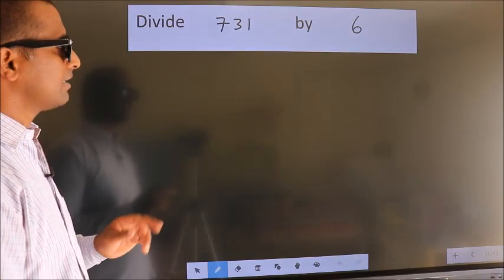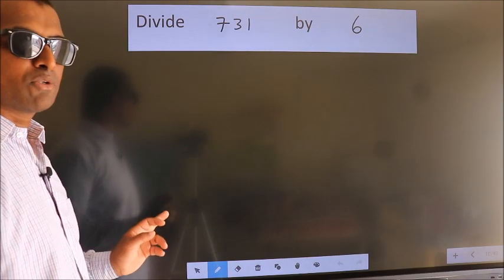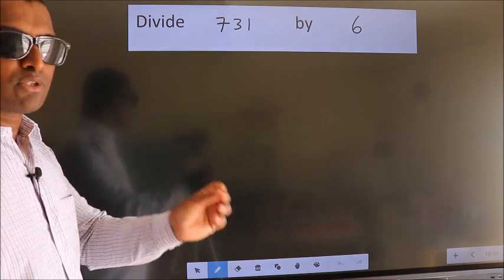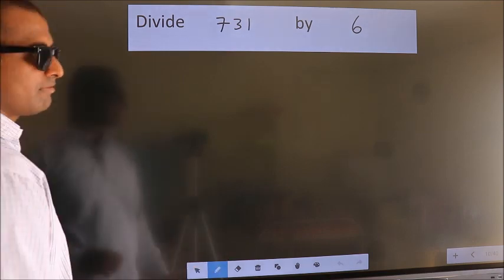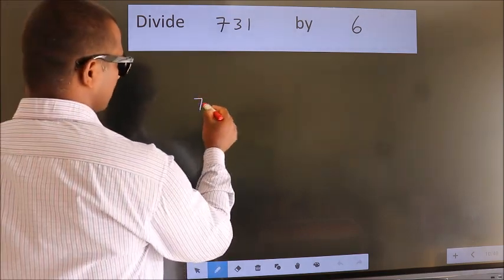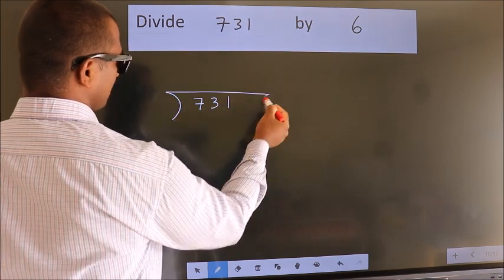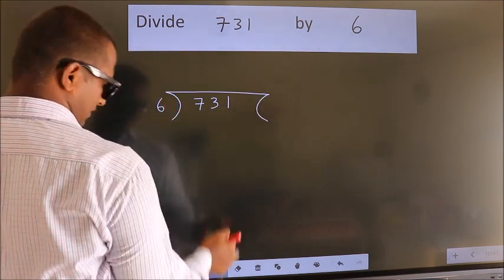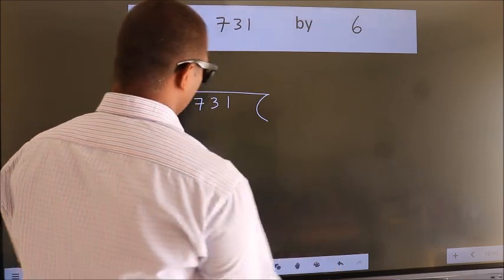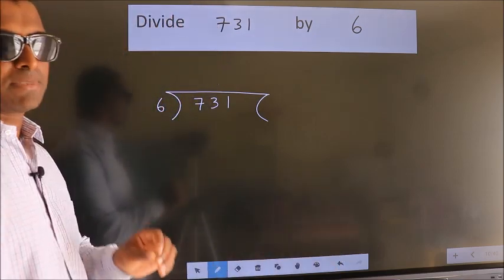Divide 731 by 6. To do this division, we should frame it in this way. 731 here, 6 here. This is your step 1.